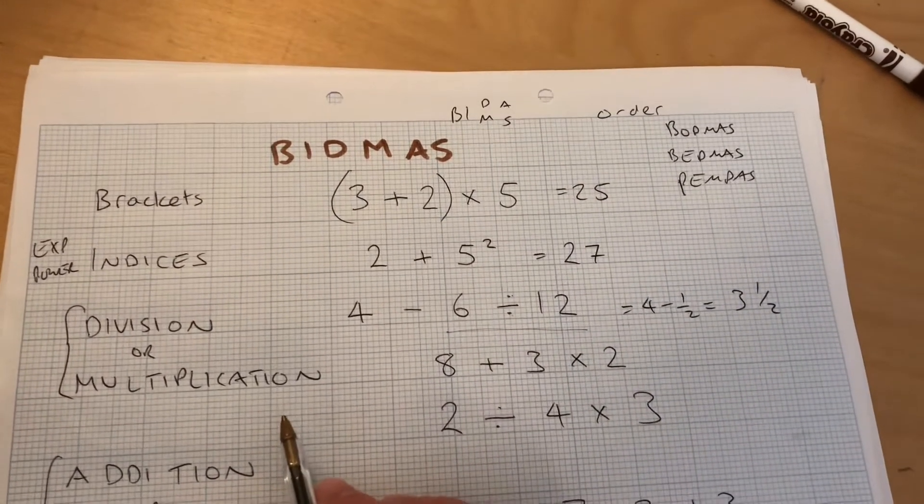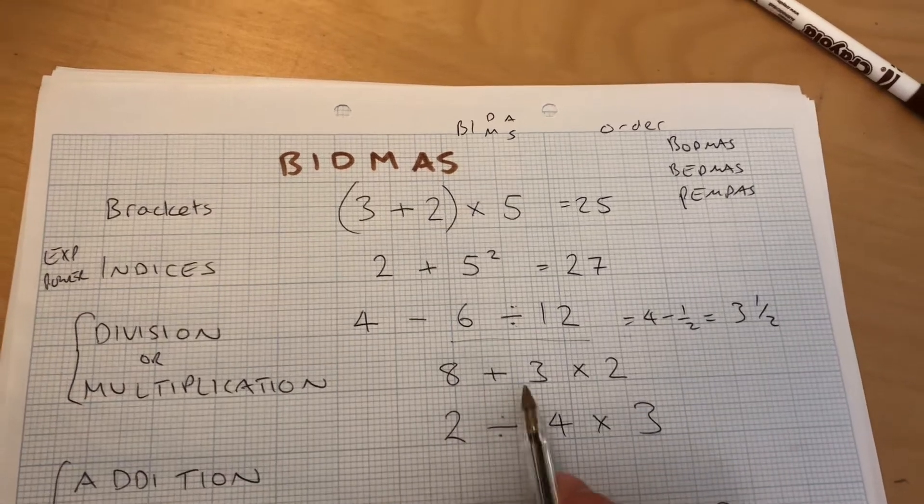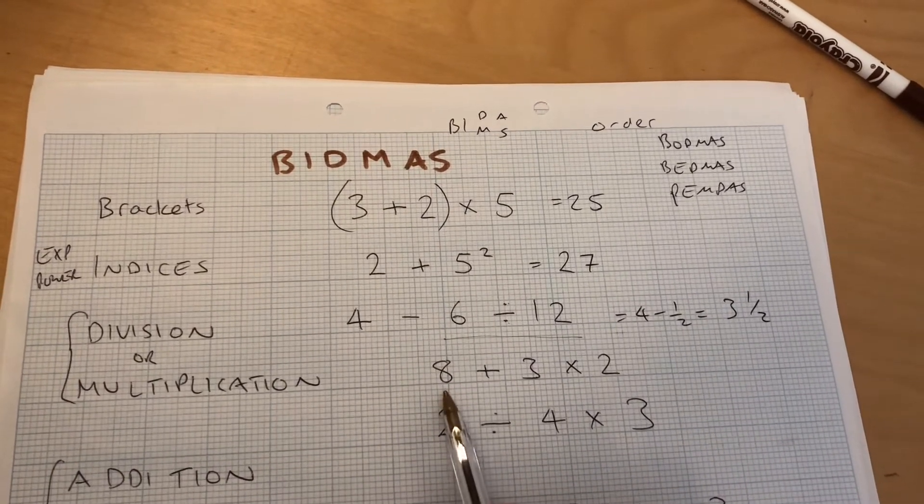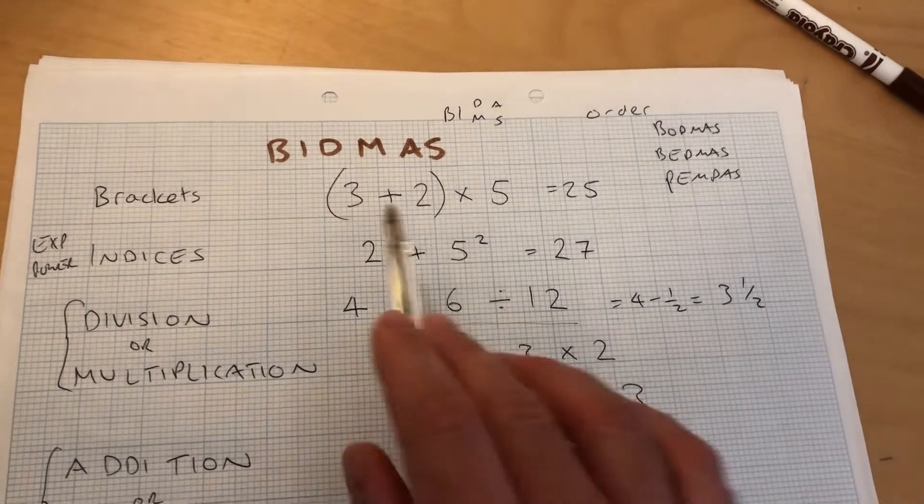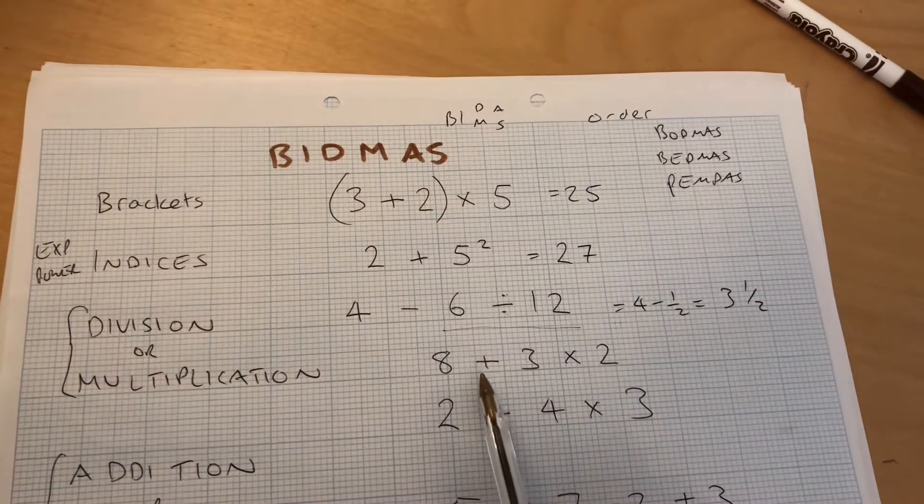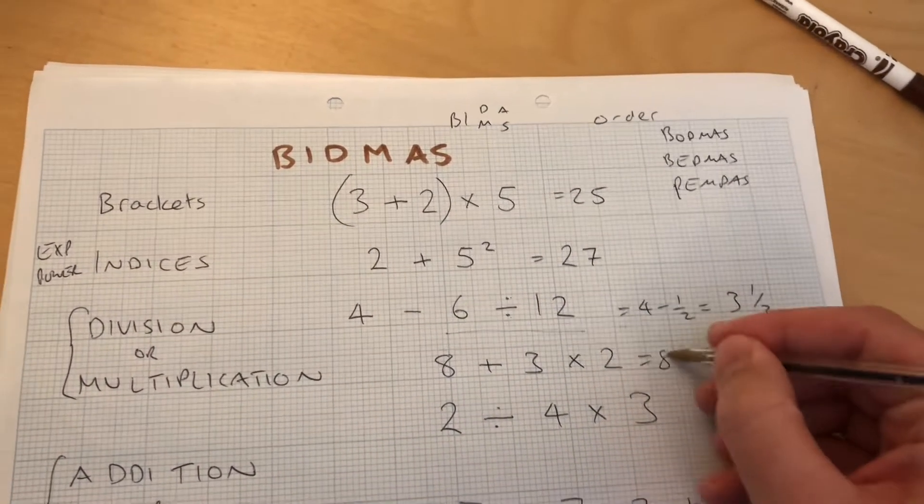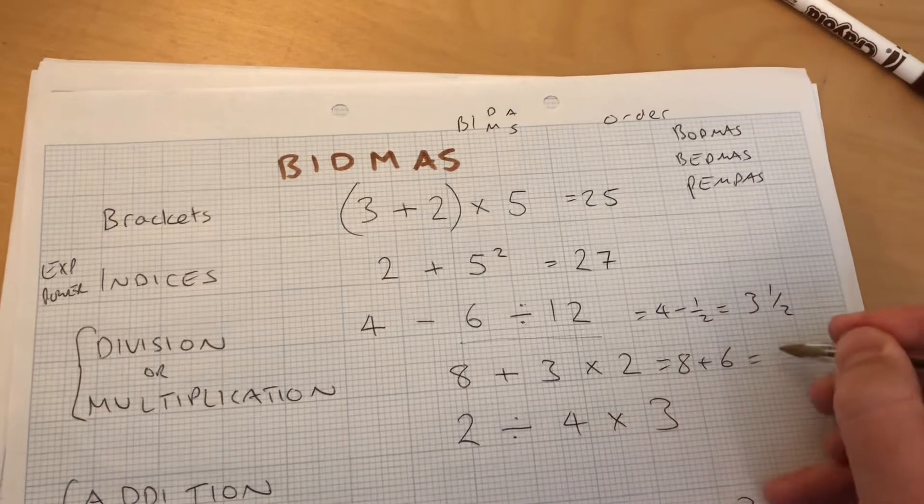And then multiplication. Here I have 8 plus 3 times 2, so I don't add the 8 and the 3. I would have needed brackets to do that. I just do 8 plus 3 times 2, which is 8 plus 6. So I get 14.